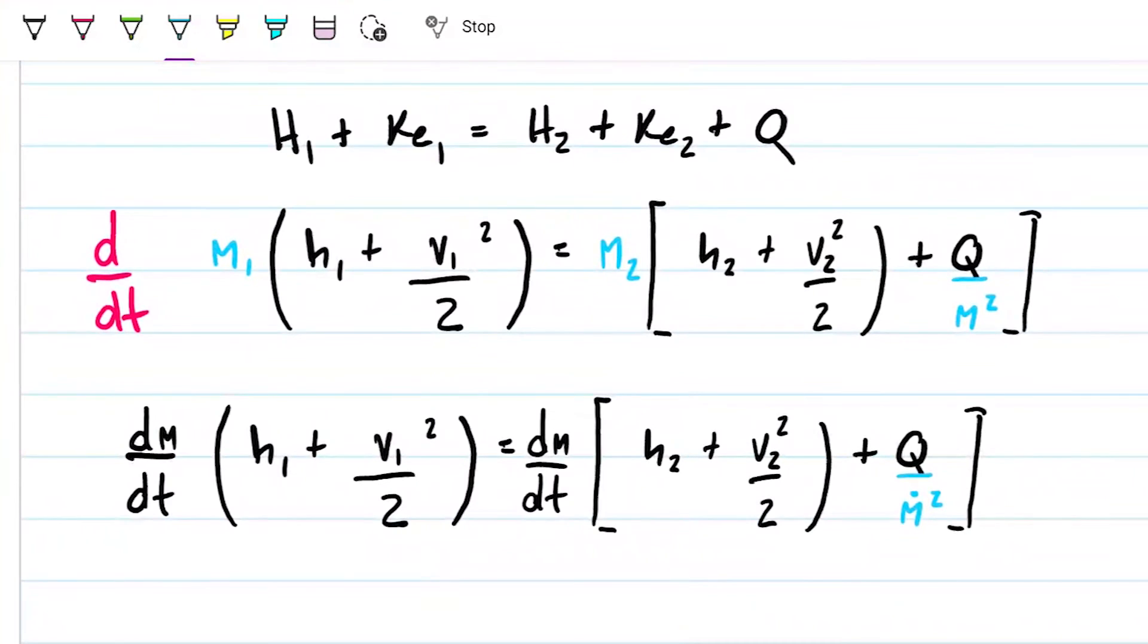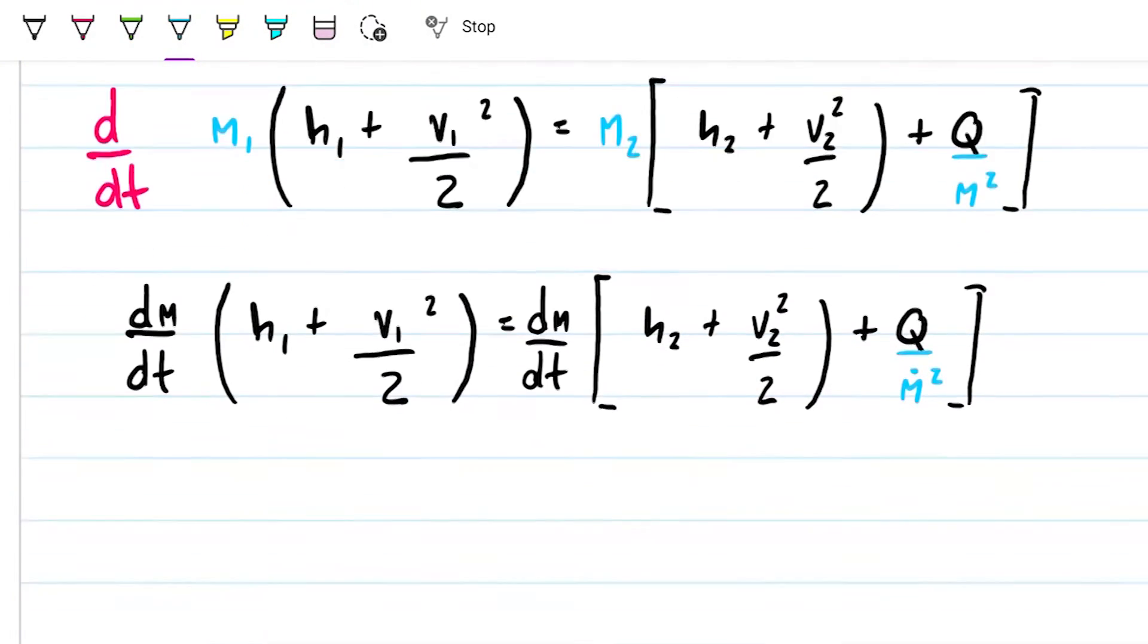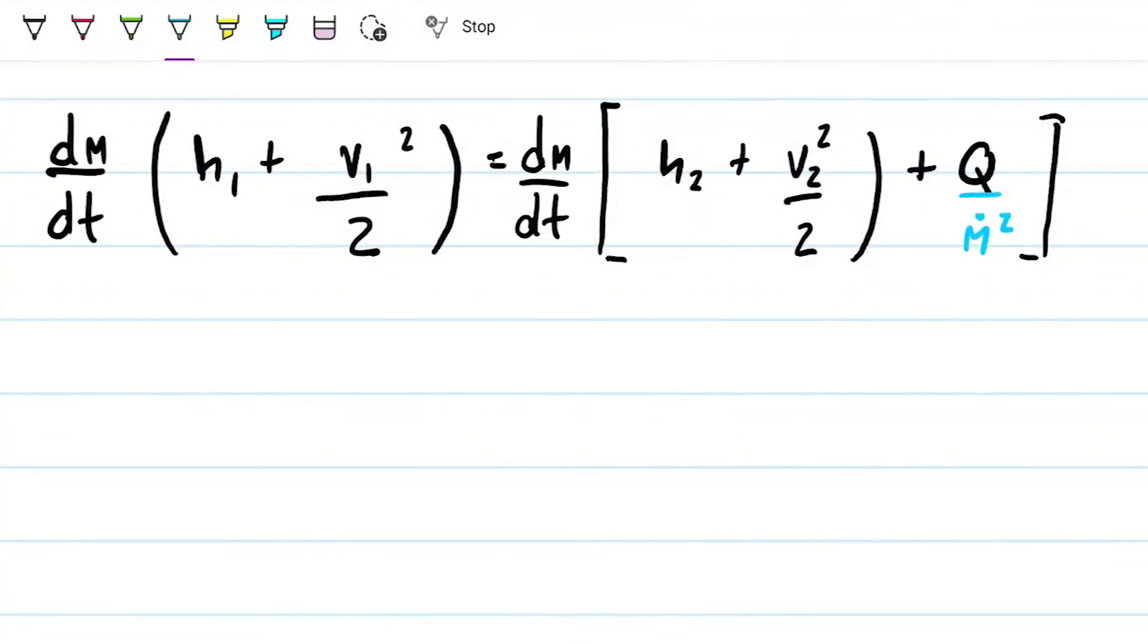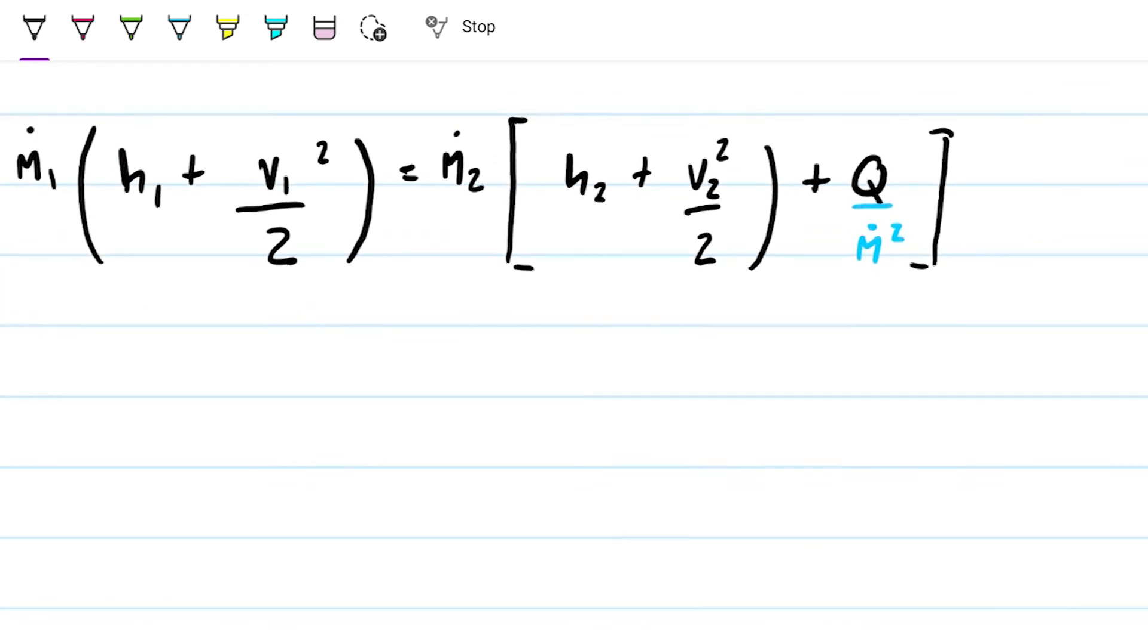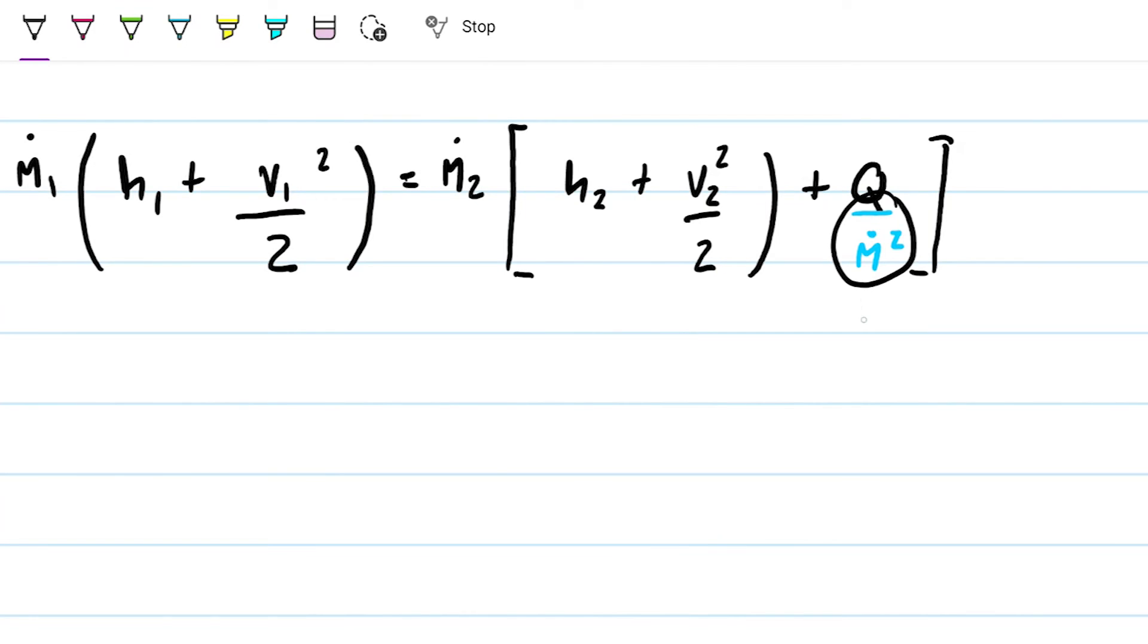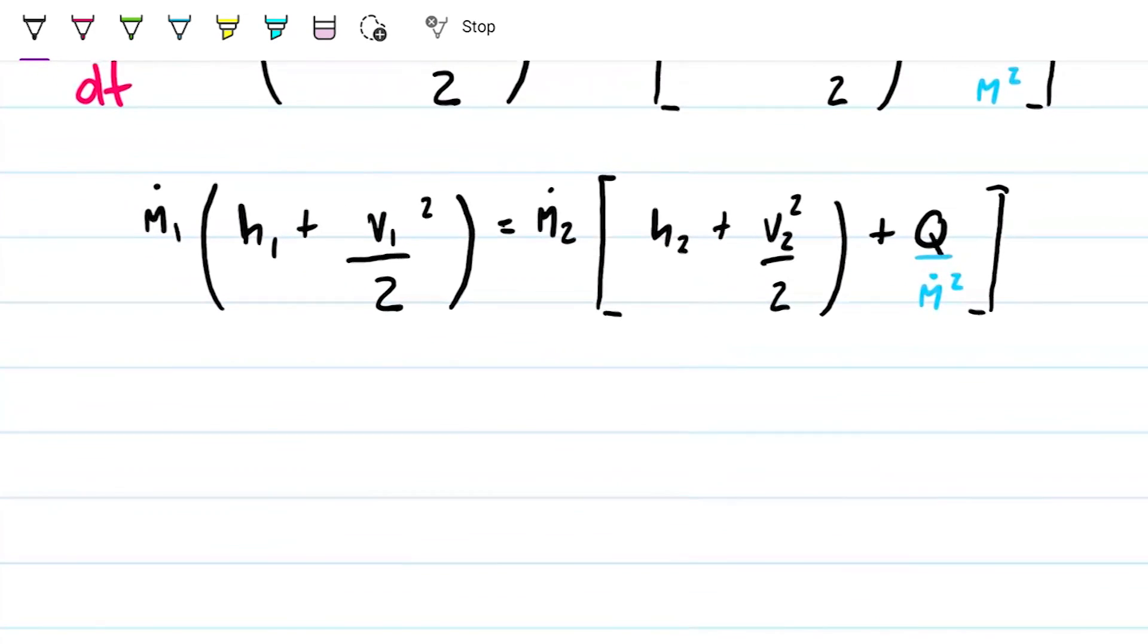So when this happens, our equation looks a bit more complicated, but somewhat simplified. If we choose to use the simpler version, it's going to be M1. Over here we have M2, and over here we have also M2. Note that this is a mass flow rate for M2.